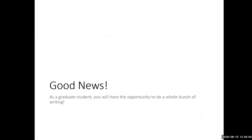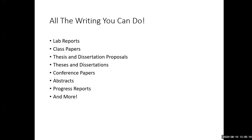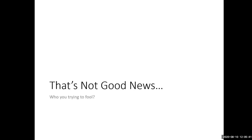As a graduate student at San Jose State — which I think is very good news, you might disagree — you get to do a whole bunch of writing in your two, three, or four years with us. All the different types of writing you're going to be doing include lab reports, class papers, theses, dissertation proposals, and the actual theses or dissertations that most of you will be writing, or projects in your different programs. You'll also have the opportunity to write conference papers, abstracts, progress reports, and more.